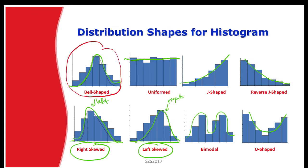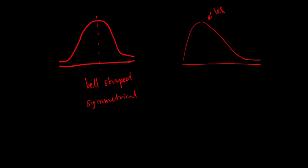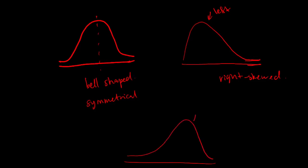To summarize the key shapes: bell shape means the data is symmetrical at the center. Right skewed means the peak is at the left and the tail tapers to the right — also called positively skewed. Left skewed means the peak is at the right and the tail tapers to the left — also called negatively skewed. Please remember these three shapes.